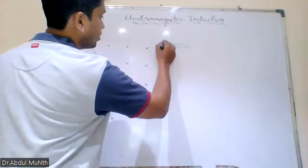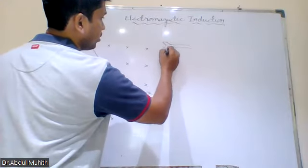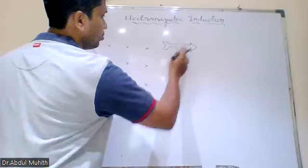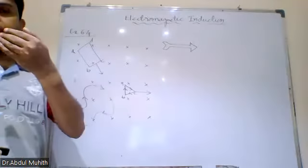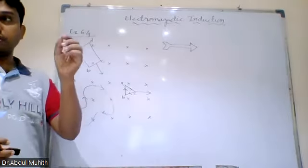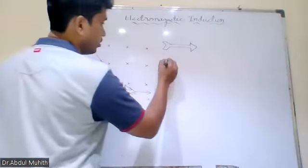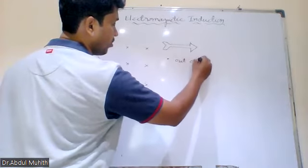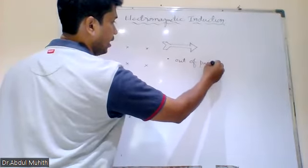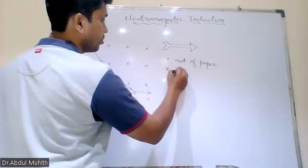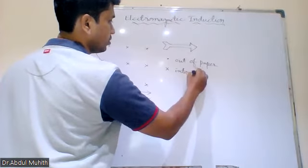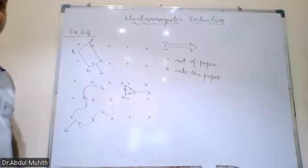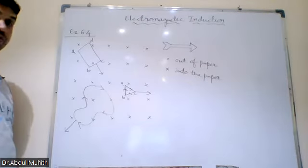That's what students get confused — that's why I'm drawing an arrow. What will happen when the arrow is coming towards you — the tip is coming towards you. So that is a dot. The dot means out of paper. Cross means into the paper.